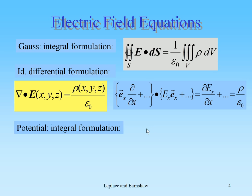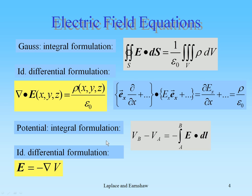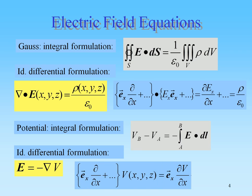The potential. In integral formulation, the potential at B minus the potential at A equals minus the integral from A to B of E·dL. In differential formulation, E is minus the gradient of the potential, where the gradient is given by Ex·d/dx plus Ey·d/dy plus Ez·d/dz. This results in Ex equals minus dV/dx, and similarly for the y and z components.